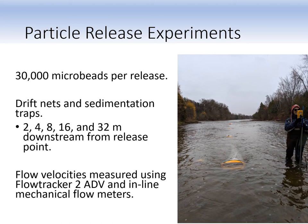To ensure our collection methods work, we conducted three preliminary particle release trials at the Speed River. We released 30,000 microbeads per release, which is a large number but one required to obtain more reliable particle capture estimates. Drift nets and sedimentation traps were positioned 2, 4, 8, 16, and 32 meters from the release point, and we simultaneously measured velocities with a FlowTracker 2 acoustic Doppler velocimeter and inline mechanical flow meters. You can see Emil measuring velocity with the ADV on the right.